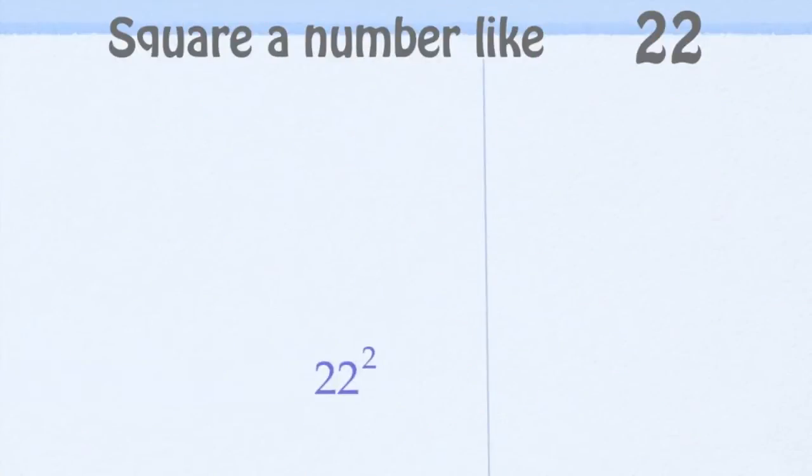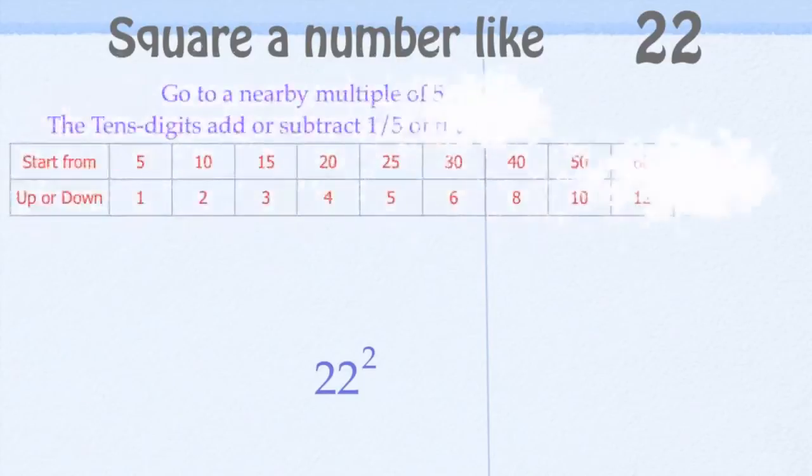Let's square a number like 22. We'll start from a nearby multiple of 5, because those are easy to square, like 5, 10, 15, 20, etc. This allows us to jump in anywhere.